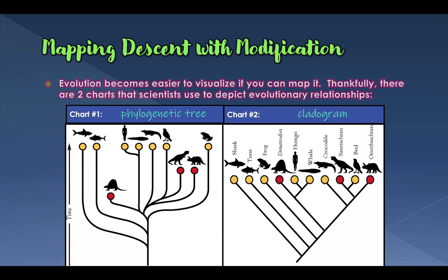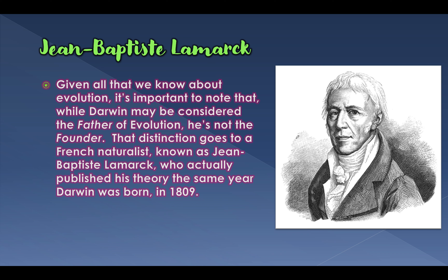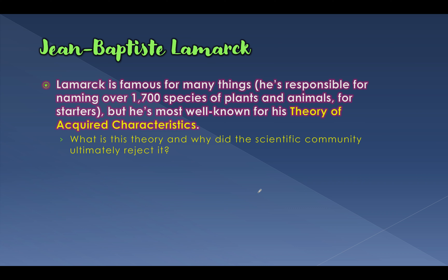The last thing I want to cover is who else helped Darwin with his understanding, because Darwin was not the only person who contributed to our understanding of evolution. The first person we know of is this French scientist from the earlier 1800s: Jean-Baptiste Lamarck. He didn't get everything right, but he did understand that animals changed over time. Lamarck is famous for naming over 1,700 species of animals and plants, and he came up with the theory of acquired characteristics.